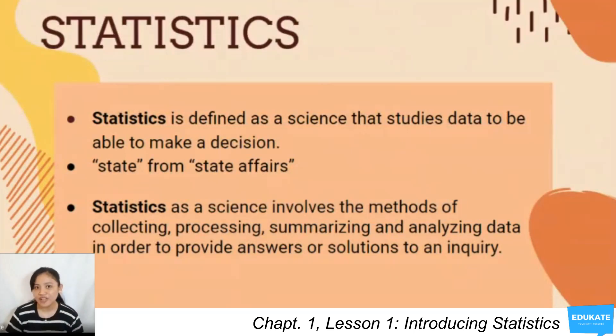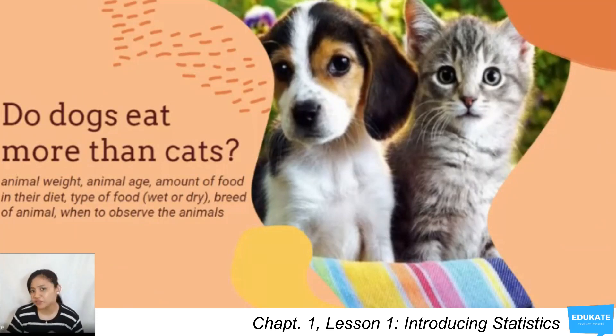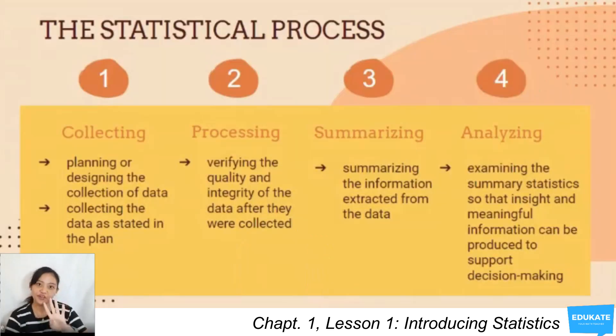For example, in our question earlier, I created the question 'Do dogs eat more than cats?' In order to answer that question, I have to consider some factors: animal weight, animal age, amount of food in their diet, the type of food they eat—wet or dry—the breed of the animal, and when to observe these animals.